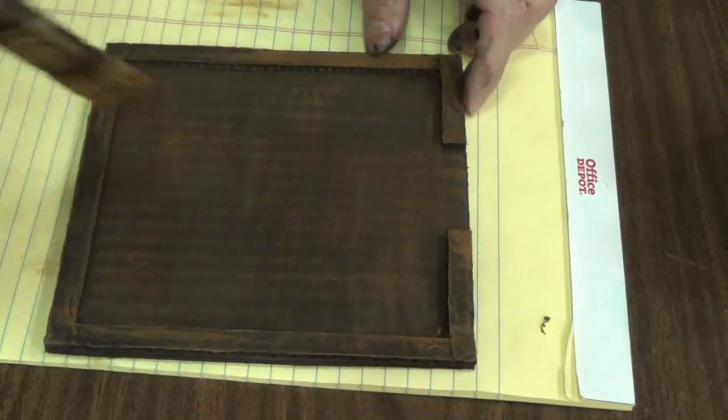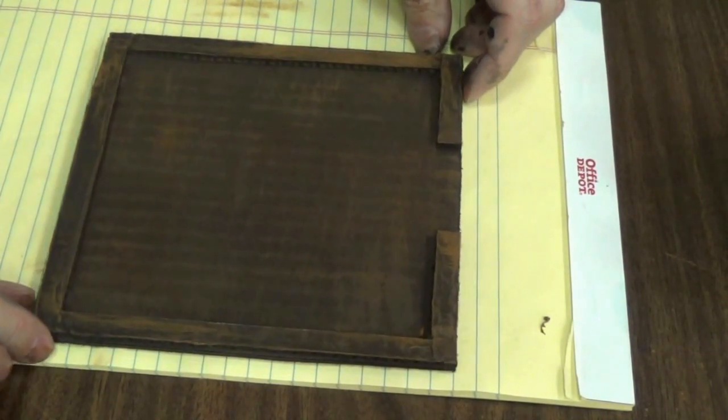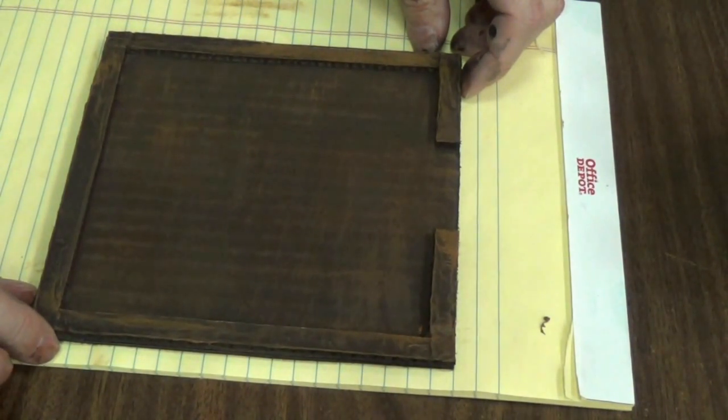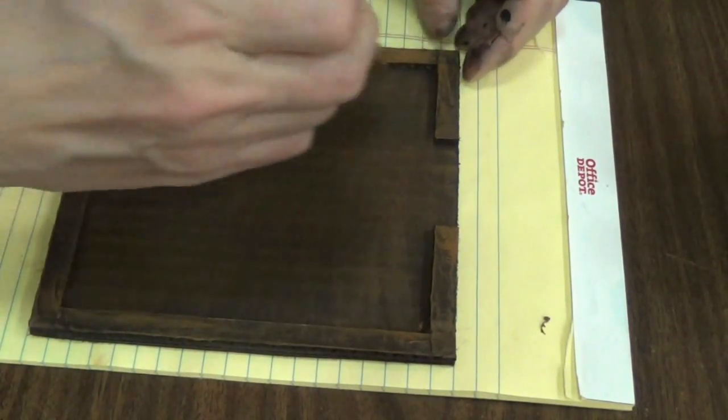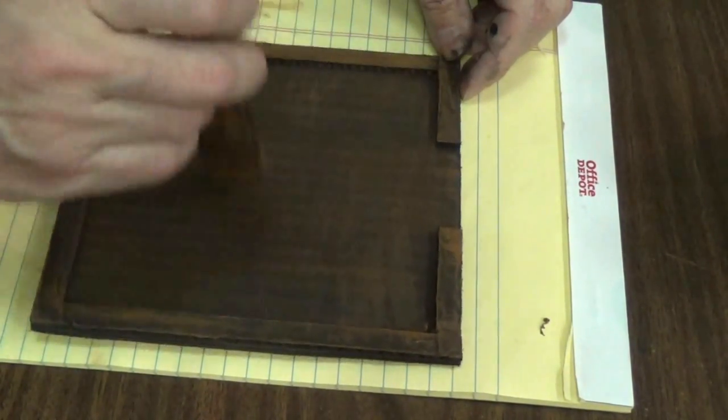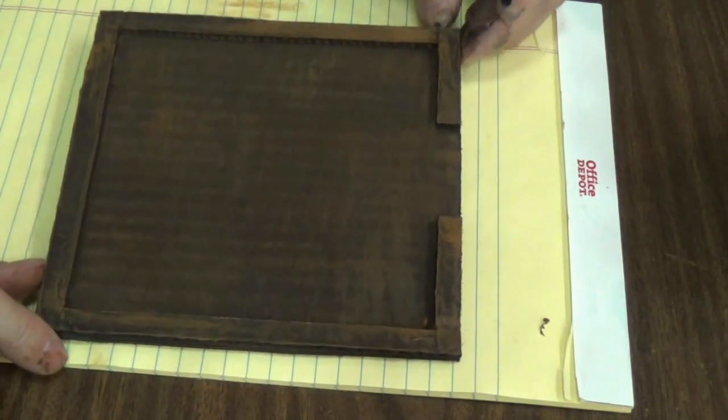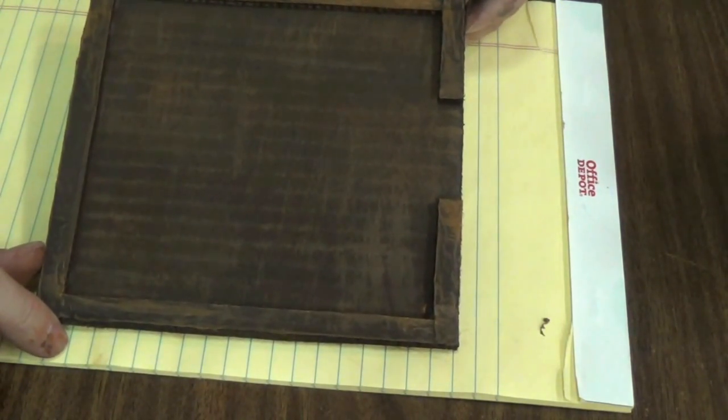Super quick, much quicker than cutting out strips or using popsicle sticks or anything of that nature. Still gives a nice effect but super quick. So there we go, there's a quick little way to do wooden floor planks in a building.